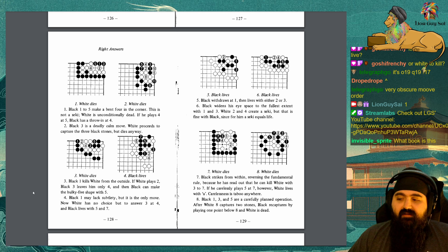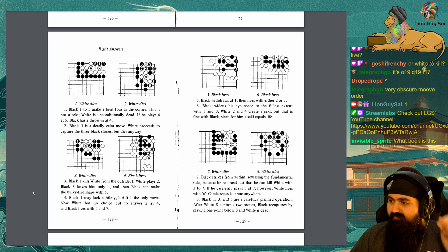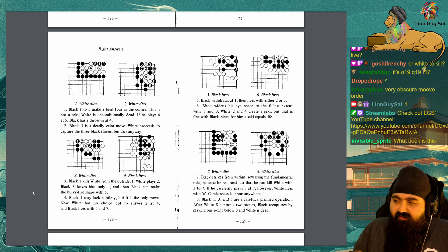5. Black withdraws at 1, then lives with either 2 or 3. 6. Black widens his eye space to the fullest extent with 1 and 3. White 2 and 4 create a seki, but that is fine with Black, since for him, seki equals life. 7. Black strikes from within, reversing the fundamental rule, because he has read out that he can kill White with 3 to 7. If he carelessly plays 5 at 7, however, White lives with A. Carelessness is a taboo anywhere. 8. Black 1, 3, and 5 are a carefully planned operation. After White 8 captures 2 stones, Black recaptures by playing 1 point below 8, and White is dead.